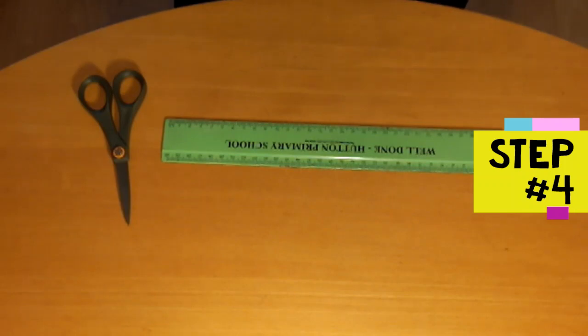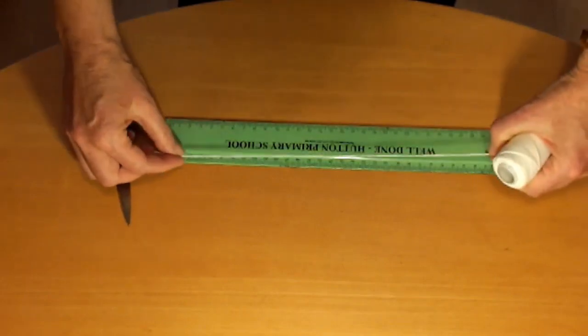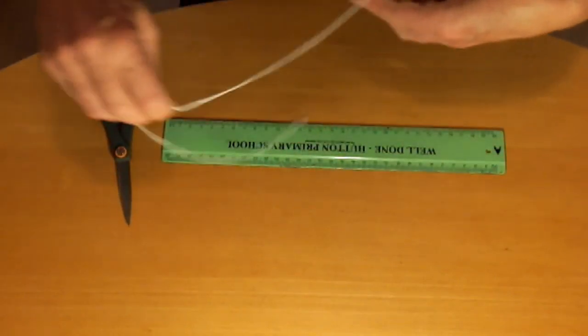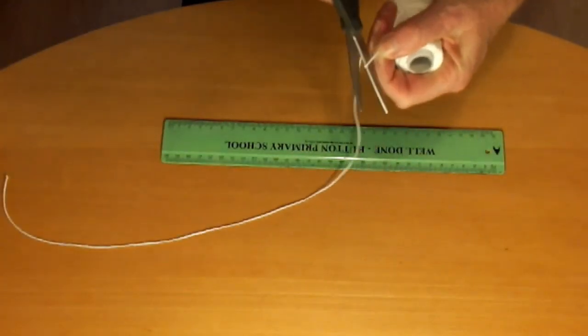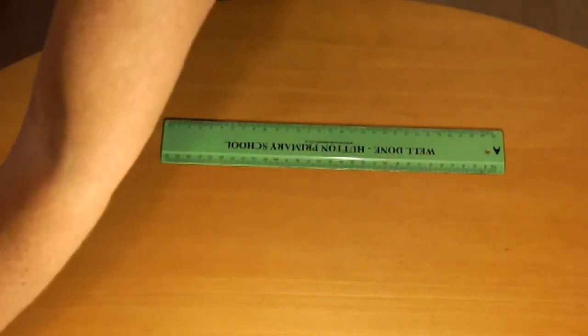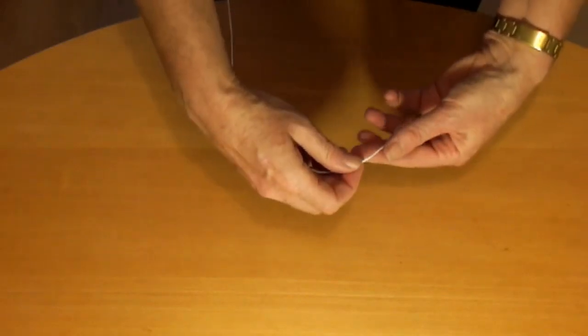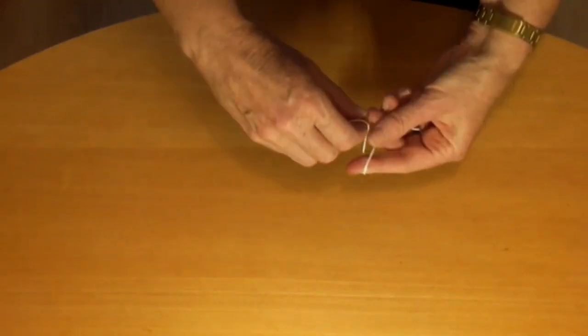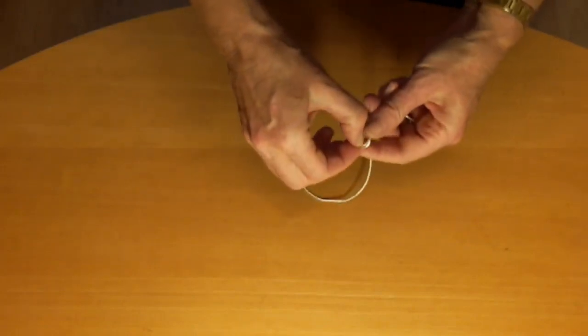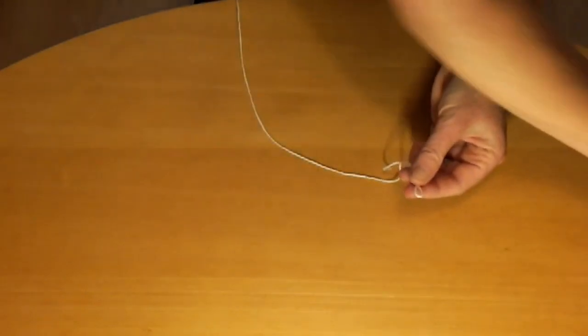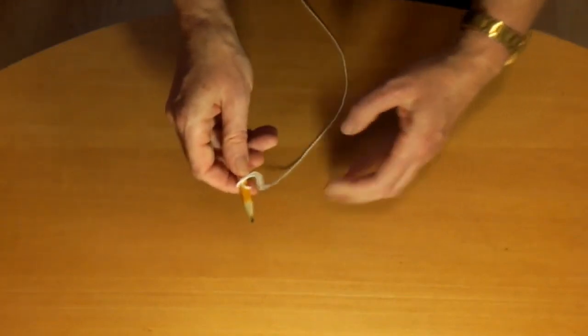Step four is to attach the string. Measure and cut a 60cm length of string. Make a slip knot in one end. I'll show you how to make a slip knot. You loop the string around your finger and then push this end of the string up through the loop. And you put it around the small pencil. This is to make the handle. And you pull it tight.